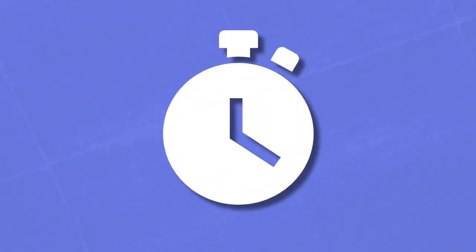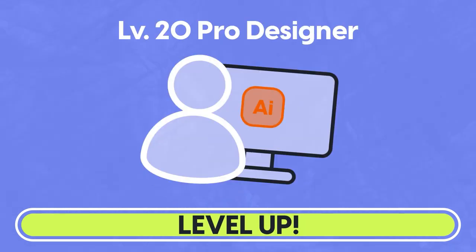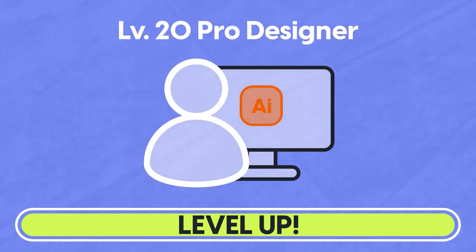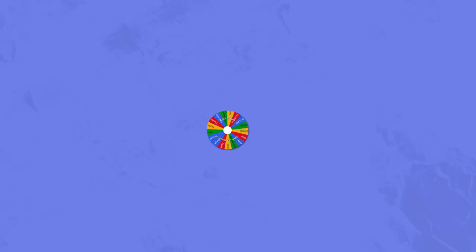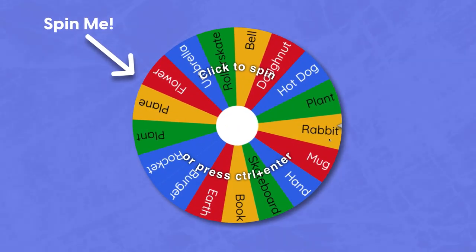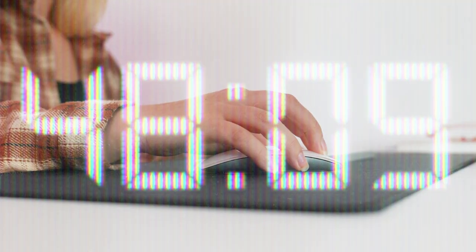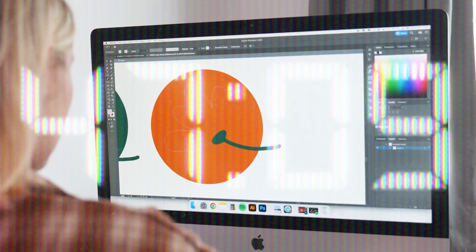A random object and a time limit — this is the hack that took my illustration skills from amateur to pro and helped create standout brands. Here's how it goes: there's a wheel full of random objects that I will spin, and whatever it lands on, I'll have 10 minutes to create an illustration using that object.